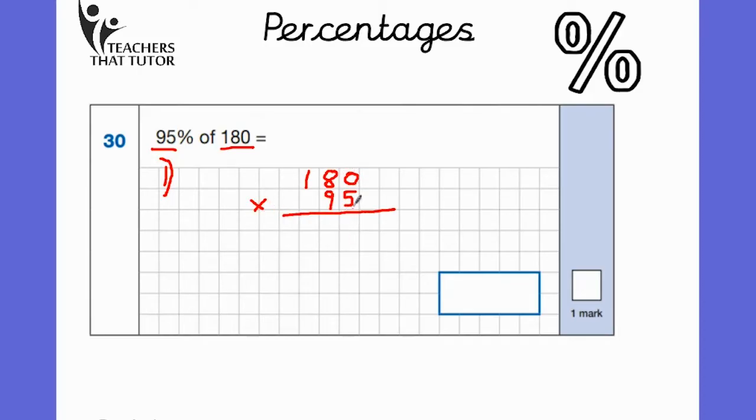Now long multiplication is something that children would have learned, so it should be fairly straightforward. Start by multiplying the ones: 0 times 5 is 0, 8 times 5 is 40, so put the 0 down and carry the 4. 1 times 5 is 5 plus 4 is 9. Then multiply the tens - put a 0 down to place hold. 0 times 9 is 0, 8 times 9 is 72, so put the 2 down and carry the 7. 1 times 9 is 9 plus 7 is 16.